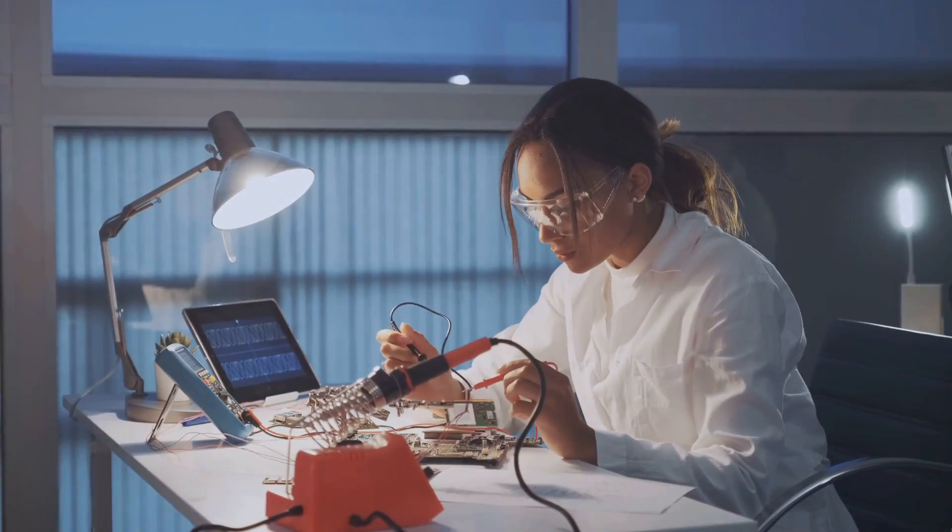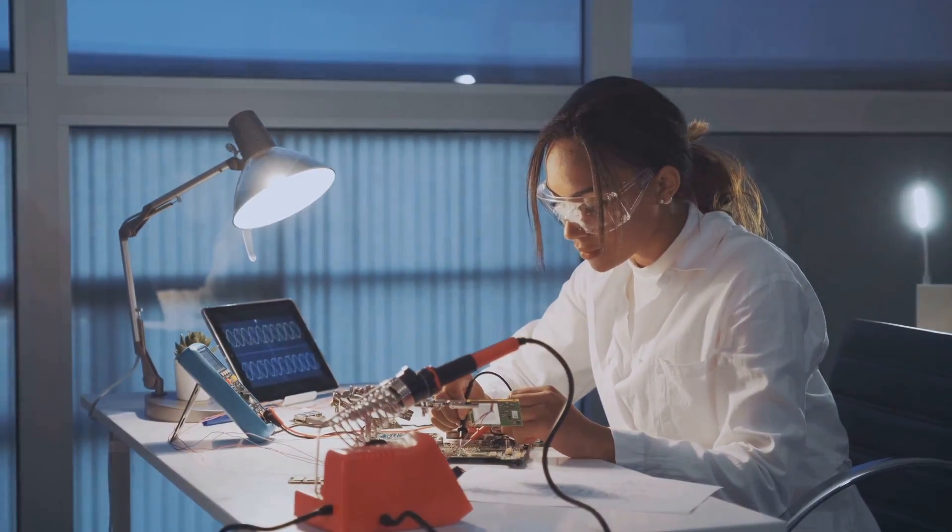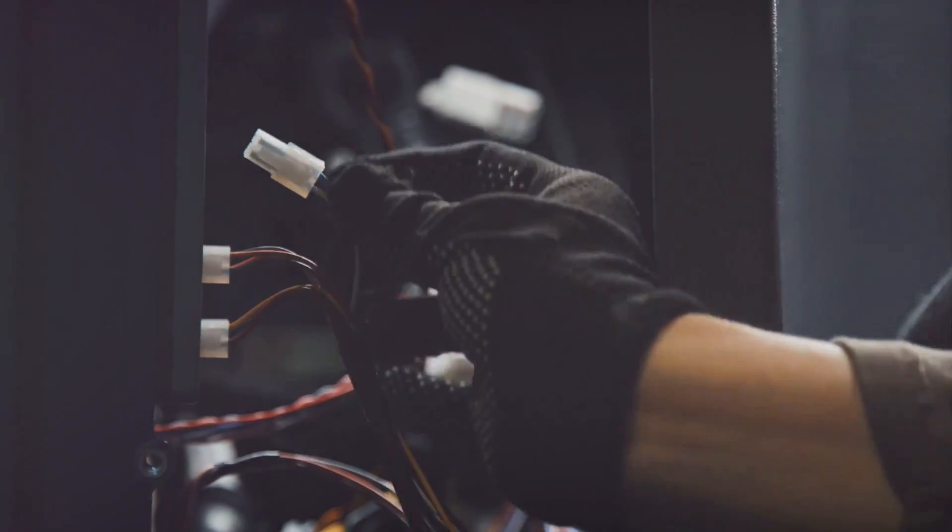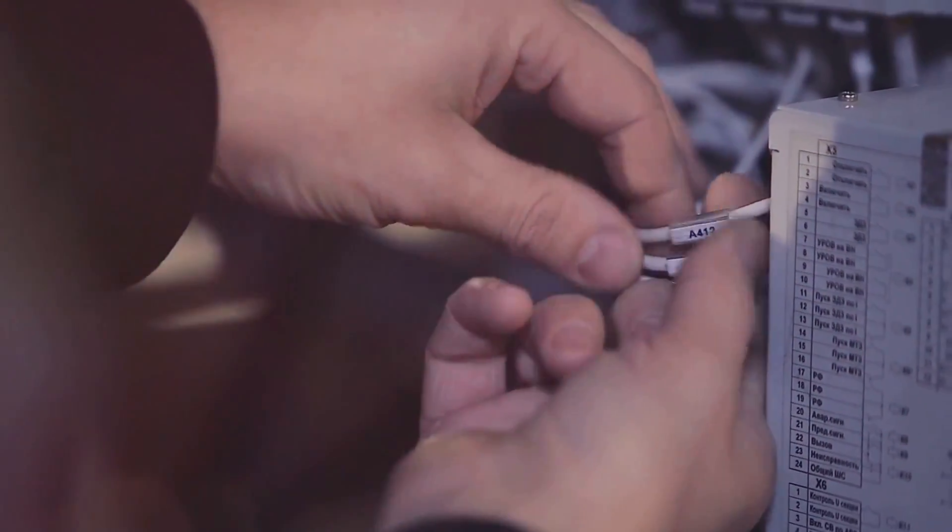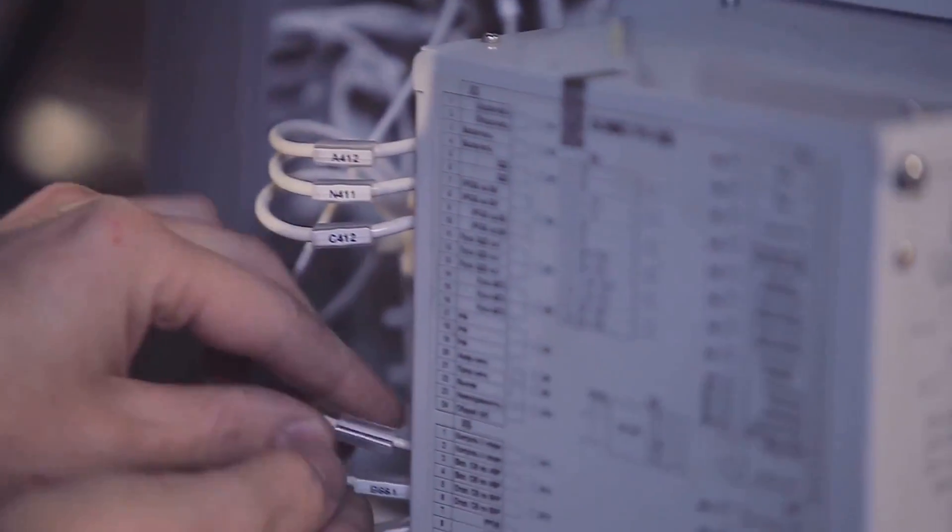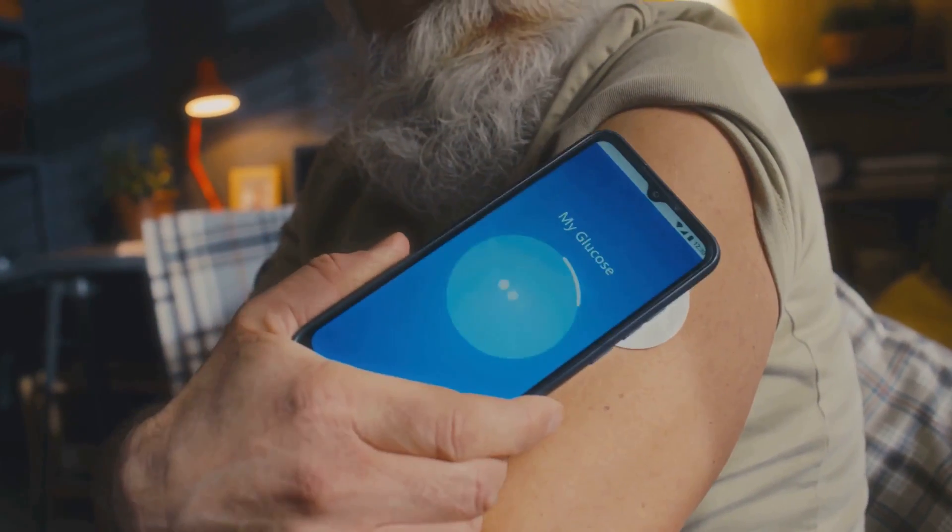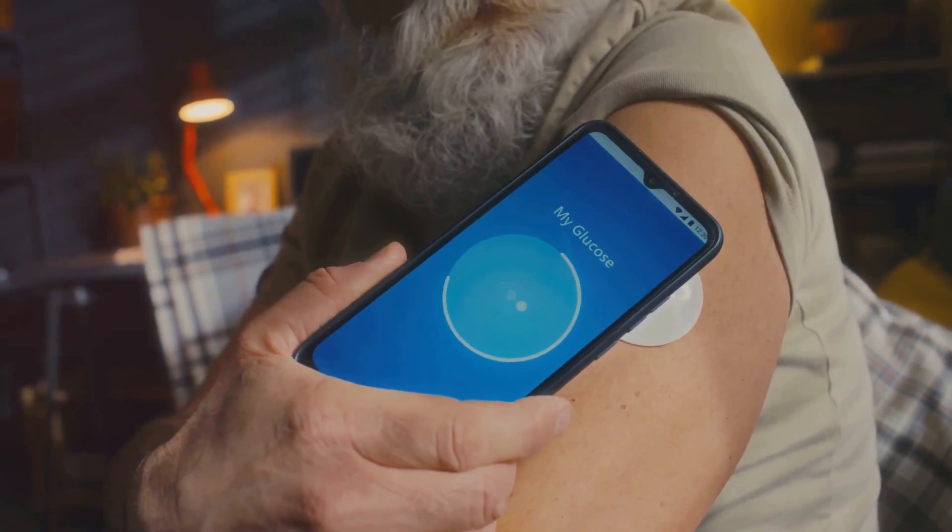Next, disconnect the solenoid coil from its power source. Safety first, always. Now place the multimeter probes on the solenoid coil's terminals. If the multimeter displays a reading within the expected range, breathe a sigh of relief. Your solenoid coil is likely in good shape.